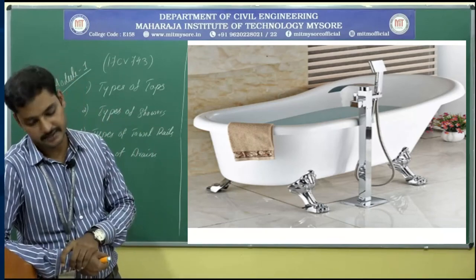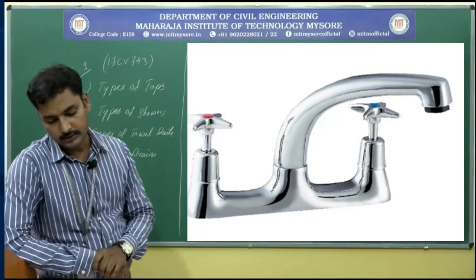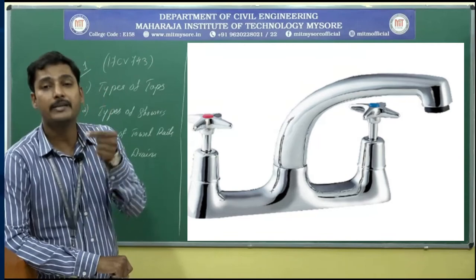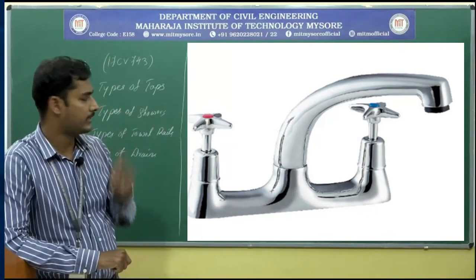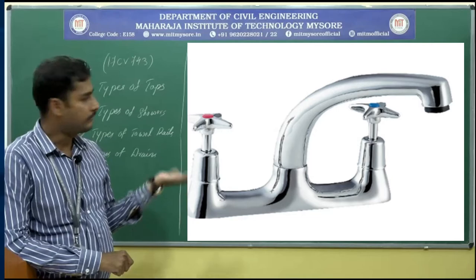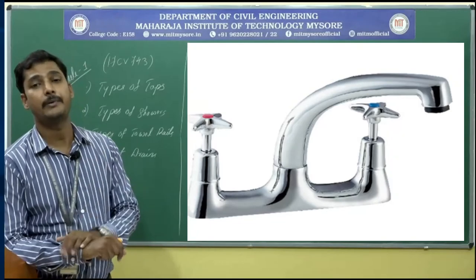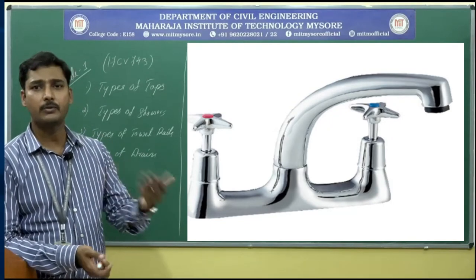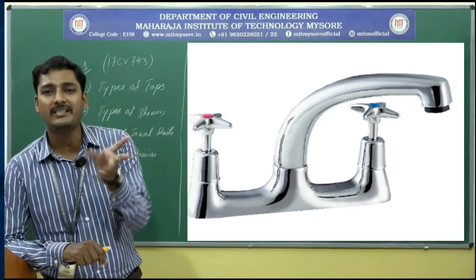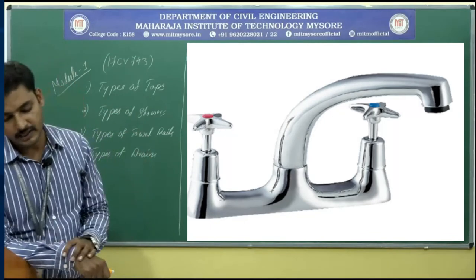The next type is mixer taps. As the name says, hot water and cold water are mixed together. We have two connections on either side — one for hot water and one for cold water. Depending on the season and comfort of the person, the water temperature requirement varies, and we can mix them to get water at a moderate temperature. These are also called mono block types of taps.